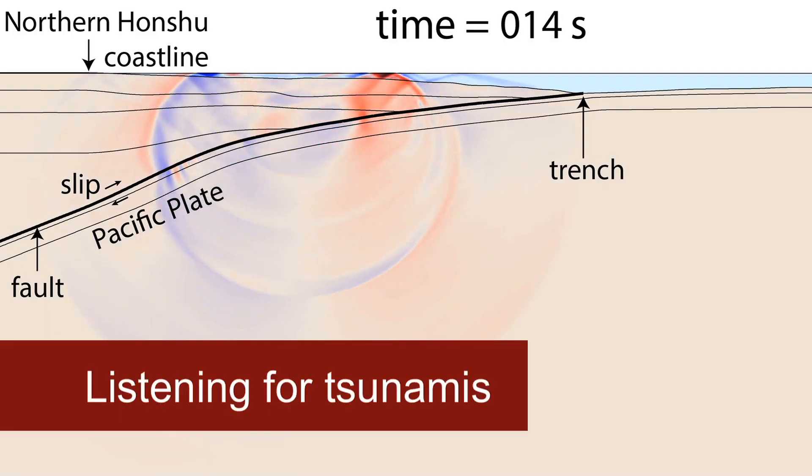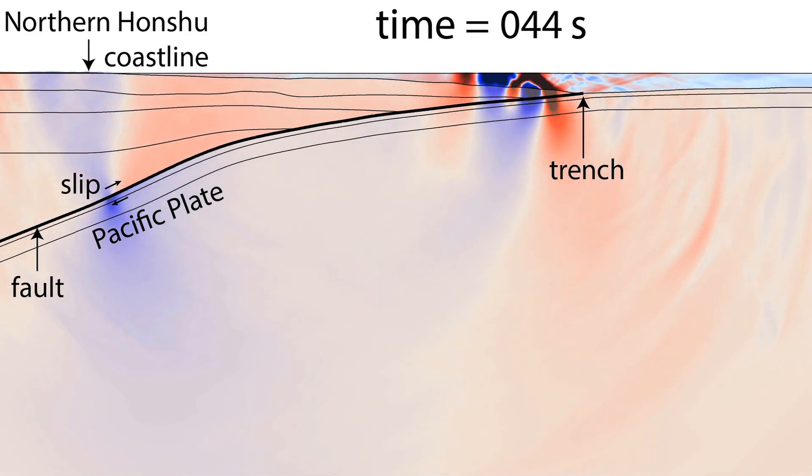The earthquake is propagating upwards along the fault and eventually reaches the trench. As it does so, it creates large amounts of slip between the two plates.